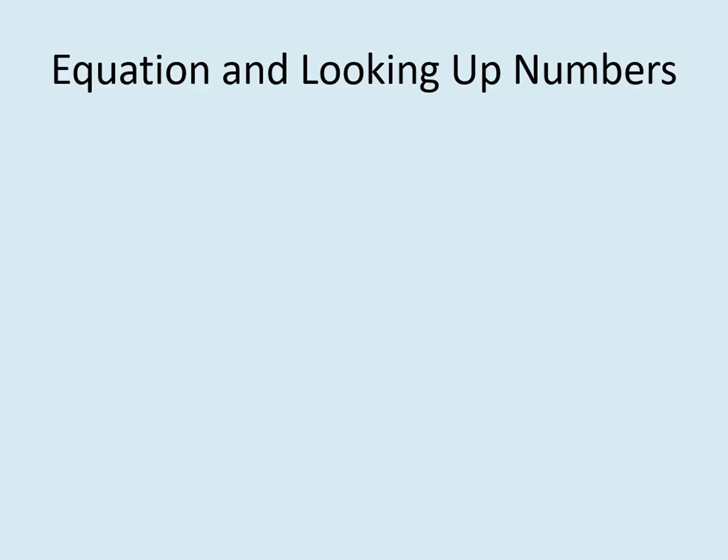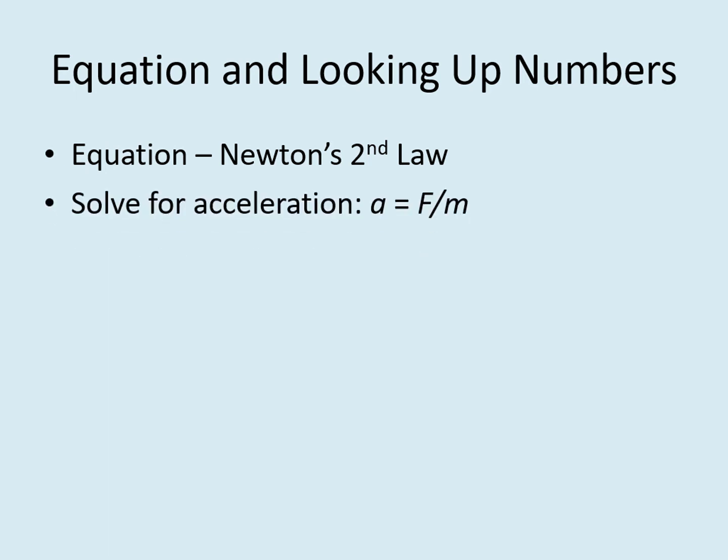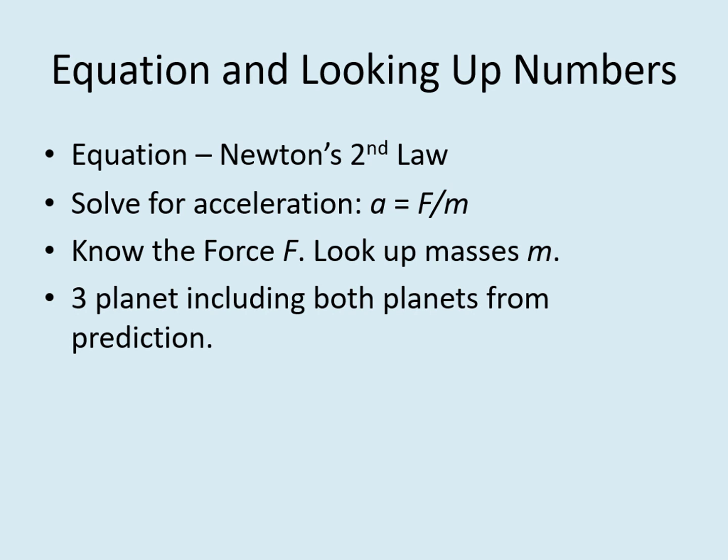Now we can set up the calculation part of the problem. The first step is to write down the formula. Since we're trying to find the acceleration and we know the force being exerted, we'll use the formula that ties those two things together, Newton's second law. We want this in the format that has the acceleration by itself on one side of the equation, so that would be a equals F over m. We already know what the force F is, so the only things we need to look up are the masses. That would be the masses of the planets, including both of the planets we predicted in part A.